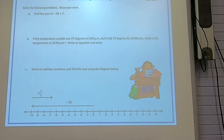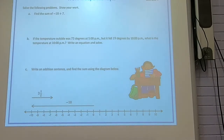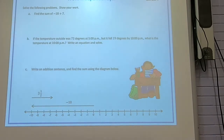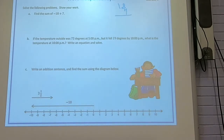Pause your video and work these problems, then come back and we'll work them together. First one: find the sum of negative 18 plus 7. The signs are different — one negative and one positive — so you subtract. 18 minus 7 is 11, and the bigger one is negative, so the answer is negative 11.